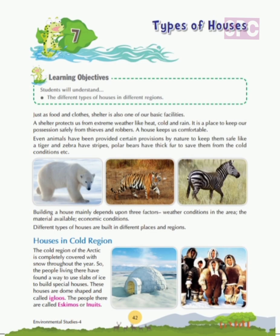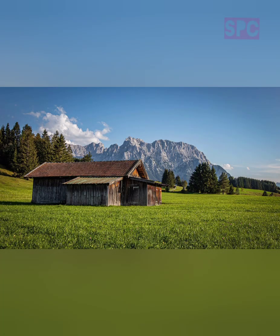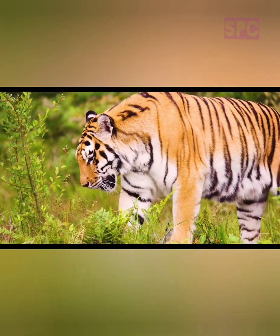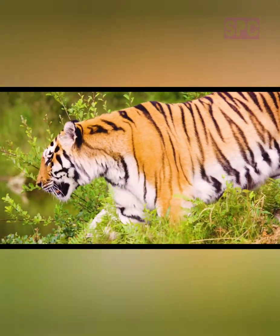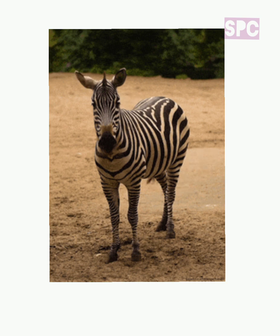Even animals have been provided certain provisions by nature to keep them safe — like a tiger and zebra have stripes, and polar bears have thick fur to save them from cold conditions. As human beings make houses to protect themselves, similarly nature has provided certain provisions to animals for their survival. For example, the stripes of a tiger help it to disguise itself as per the surrounding to hunt its prey.